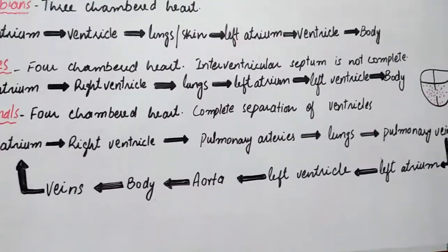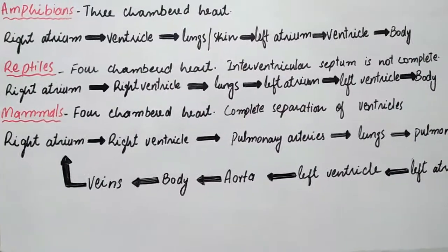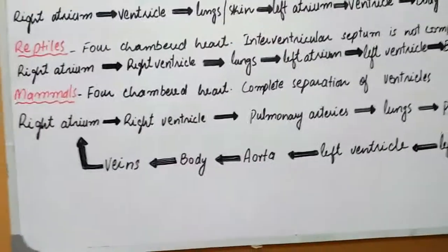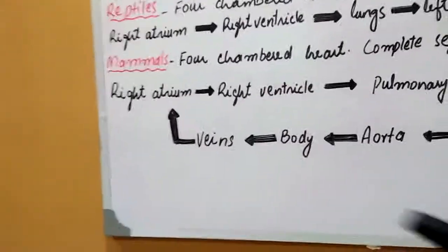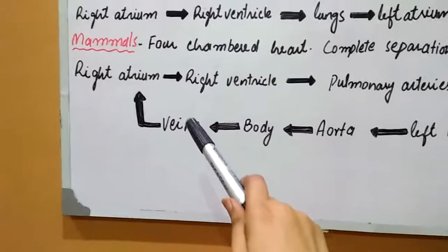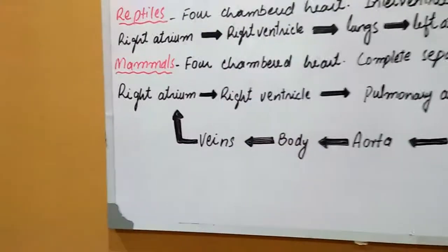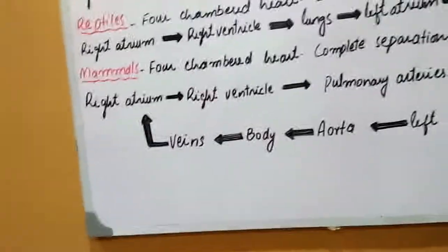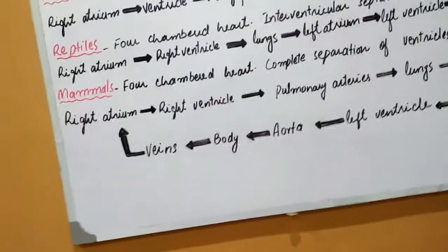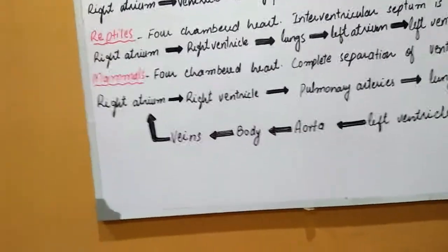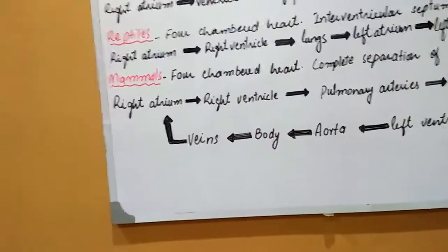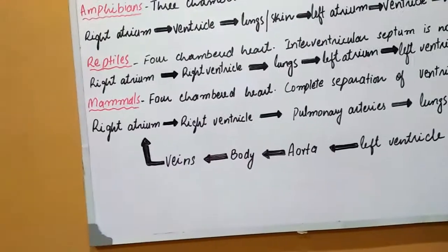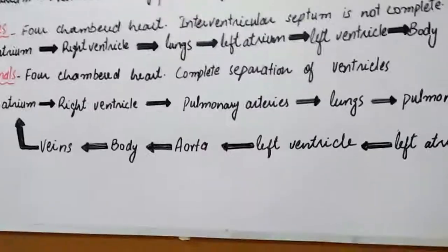Next are the mammals. In mammals, there is a complete separation of the ventricles, so there is no mixing of oxygenated and deoxygenated blood, and their heart is four-chambered. Deoxygenated blood through the venous system enters the right atrium — all veins collect and pour deoxygenated blood into the right atrium. From there it goes towards the right ventricle when the atria contract.